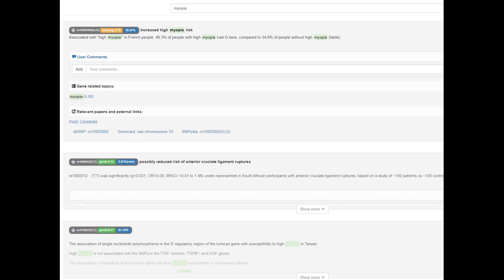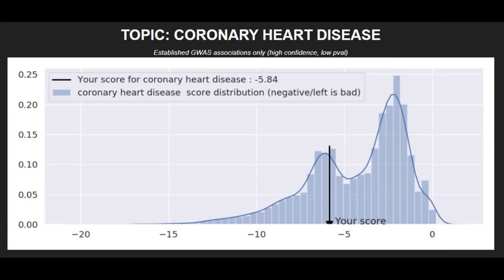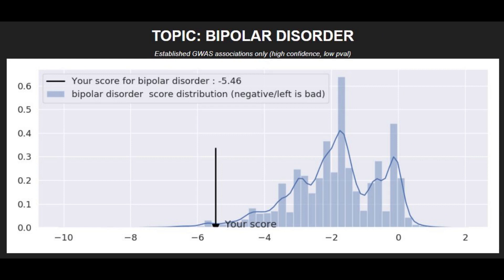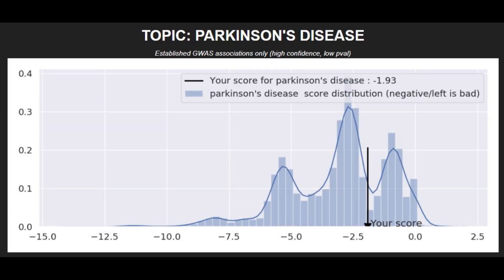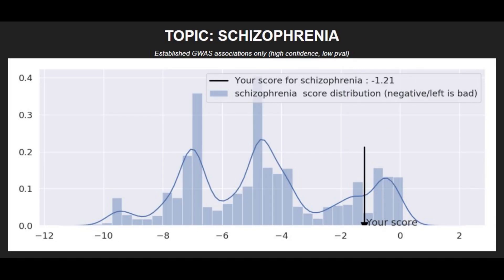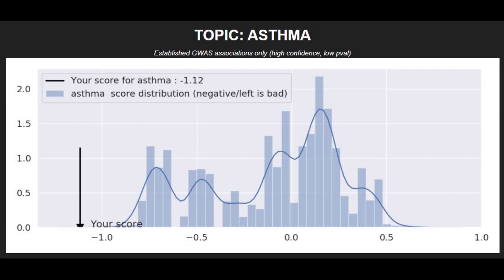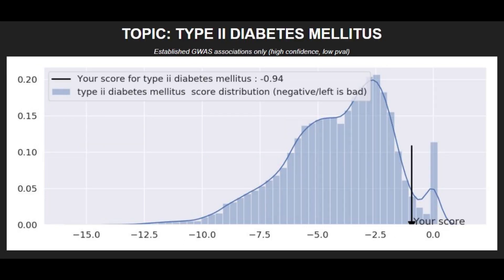He did not have the European mutation that protects against myopia. Moving on to polygenic traits, he had a high risk score for coronary heart disease, a super high risk score for bipolar disorder, a super high risk score for brain aneurysm, a pretty average risk score for Parkinson's, and a pretty below-average risk score for schizophrenia.